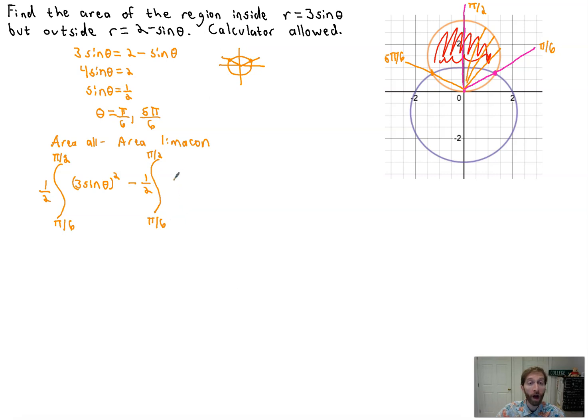of the limeson, or 2 minus sine theta squared. Now, that only gives us half the area. That gives us this area right here. So we're going to double each of those. And that's what I'm going to multiply by 2. So that's one way of doing it. And I'll do that with a calculator shortly.